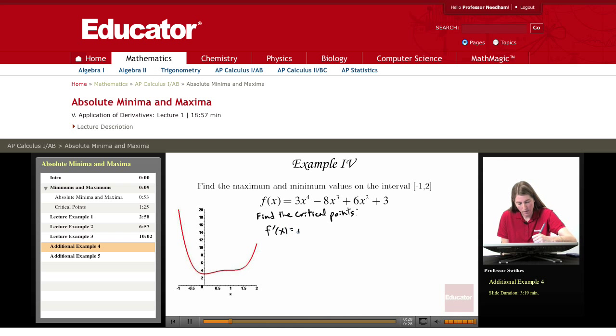f prime is 12x cubed minus 24x squared plus 12x, and we'll set that to zero. I'll take a step and just set it to zero, then we'll start working on factoring it.